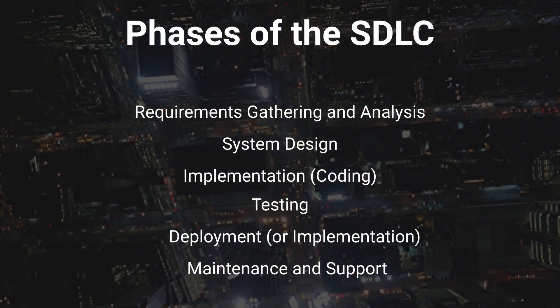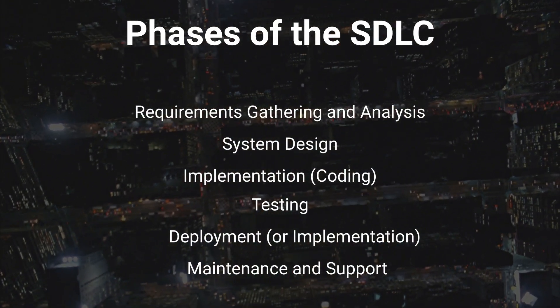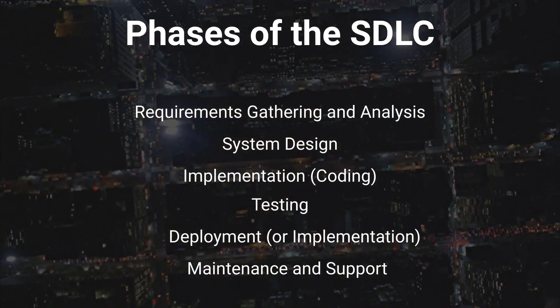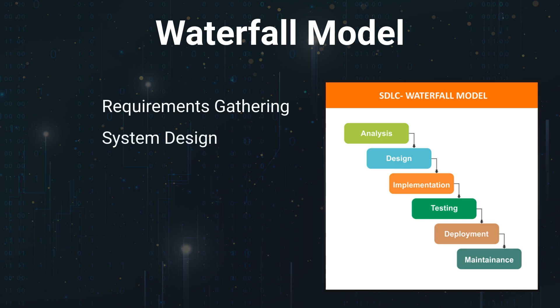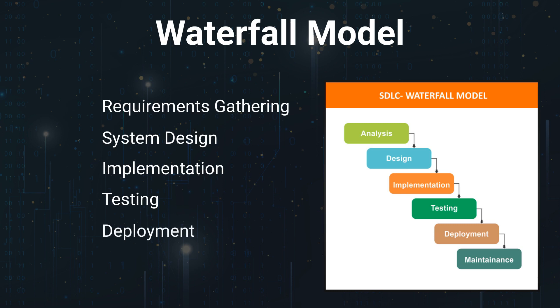It's important to note that the SDLC is often implemented in various models, such as the waterfall model, Agile, or iterative approaches, which may adapt the phases to suit different project requirements and methodologies. The waterfall model is a traditional and linear approach to the SDLC. The development process is divided into distinct, sequential phases, with each phase building upon the outcomes of the previous one. These phases are: Requirements Gathering, System Design, Implementation, Testing, Deployment, and Maintenance — ongoing maintenance and support to ensure the software functions correctly and is updated as needed.